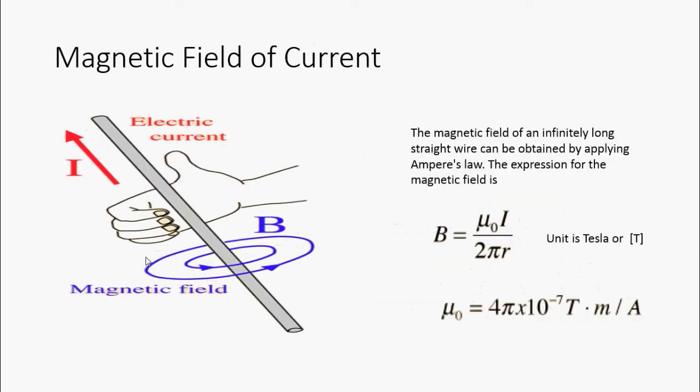The magnetic field of an infinitely long straight wire can be obtained by applying Ampere's law. The expression for the magnetic field is stated on this picture and the unit is in Teslas.